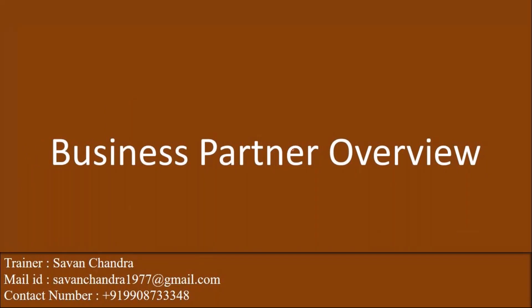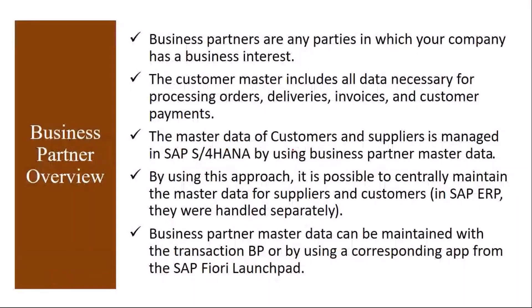First we will understand what is a business partner — what is a customer, why it is used, how the business partner is different from ECC. Business partners are any parties in which your company has a business interest. A business partner can be not only a customer — it can be a vendor, or it can be an internal employee, or an outside technician, service technician, or anybody with whom we have a business interest. Those are called business partners.